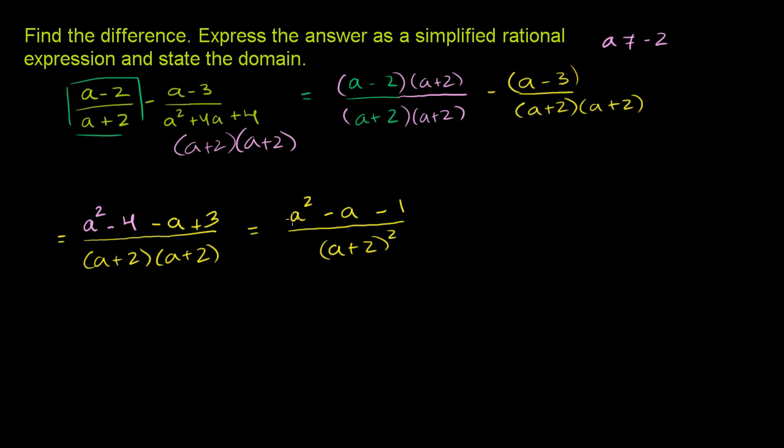Now, we might want to factor this numerator out more, just to make sure it doesn't contain a common factor with the denominator. The denominator is just two a plus 2's multiplied by themselves. And you can see from inspection, a plus 2 will not be a factor in this top expression. If it was, this number right here would be divisible by 2. It's not divisible by 2, so a plus 2 is not one of the factors here. So there's not going to be any more simplification. So we're done.